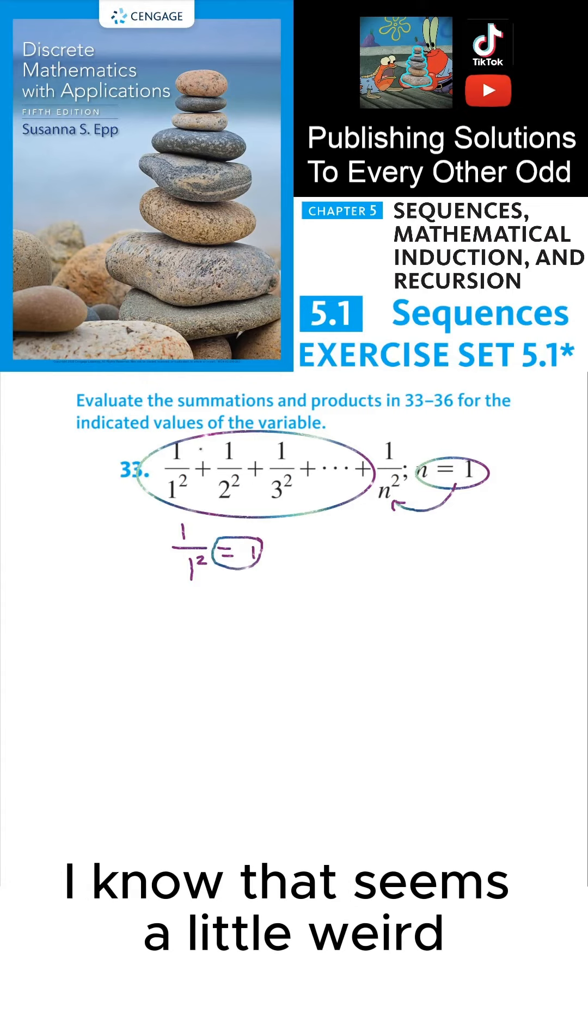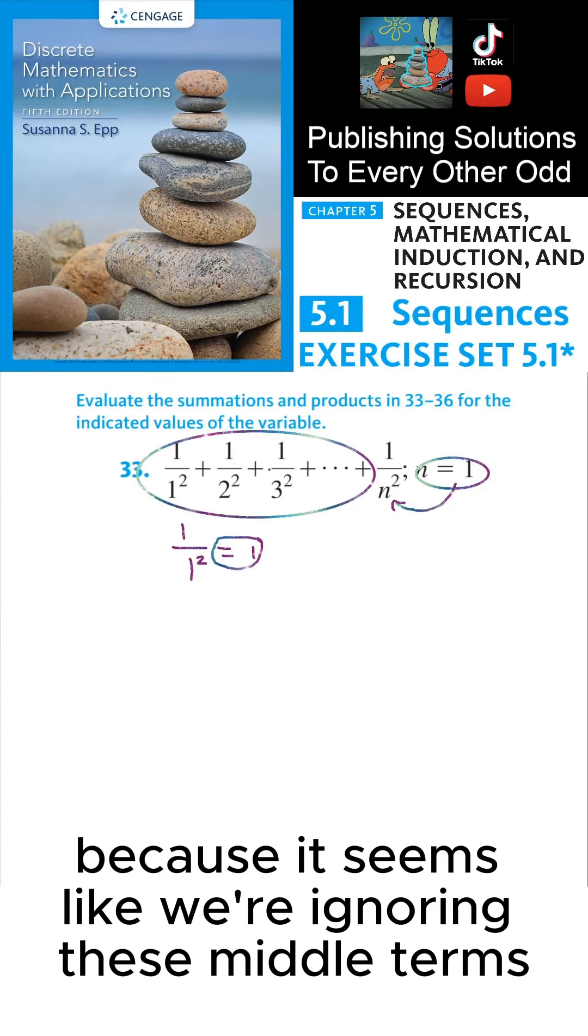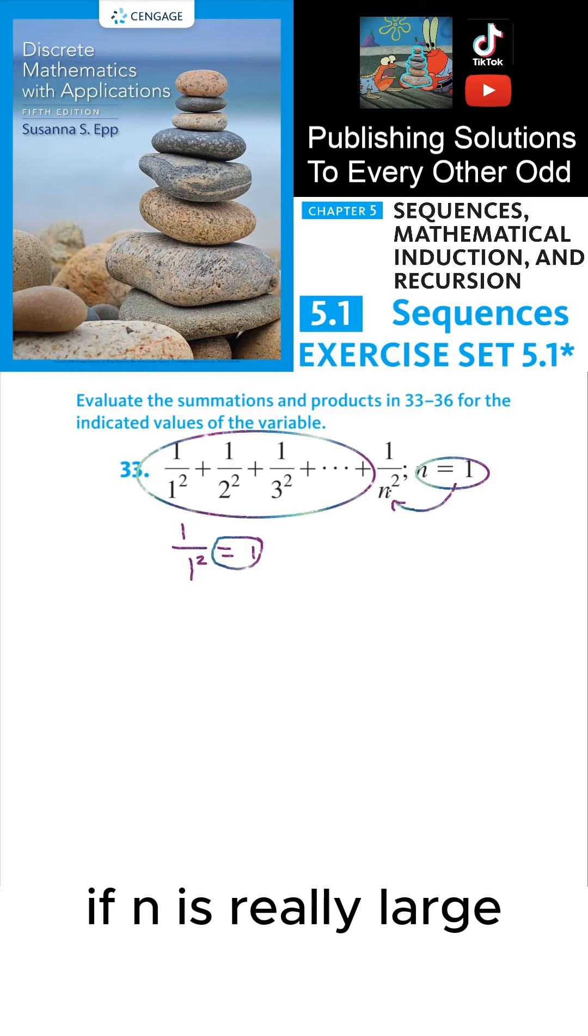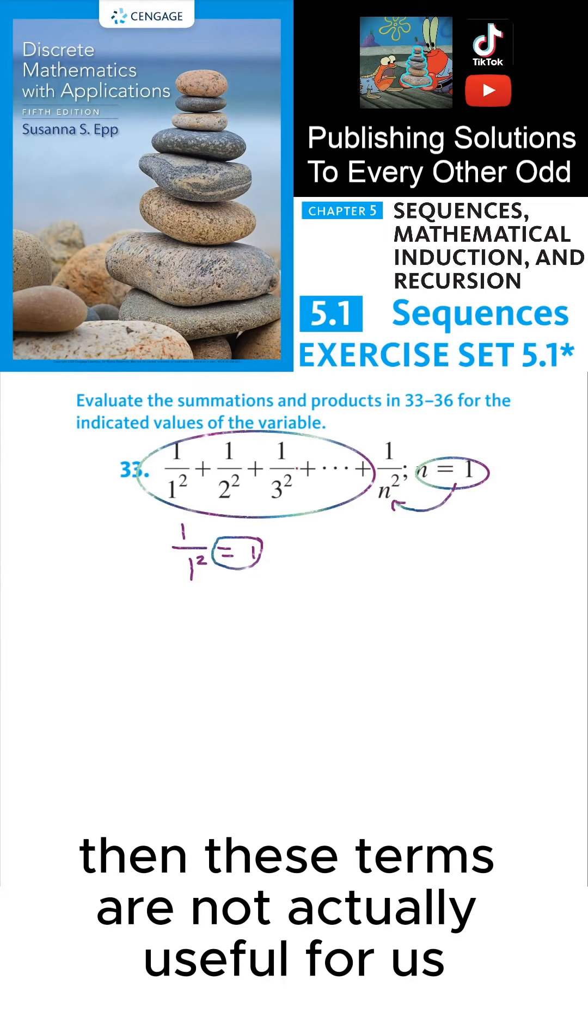I know that seems a little weird because it seems like we're ignoring these middle terms, but these middle terms are just a way of explaining what those terms would look like if n is really large. But if n is small, like n equals 1, then these terms are not actually useful for us.